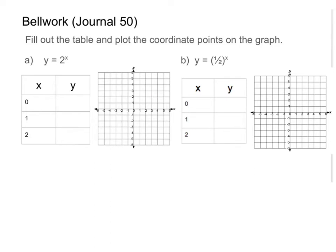Let's start with plugging in zero for x, so this looks like 2 to the zero power. The next is 2 to the first power, and then 2 to the second power. Anything to the zero power is just one. Anything to the first power is itself, so that's two. And to the second power is two times two, which is four. So my y values are 1, 2, and 4.